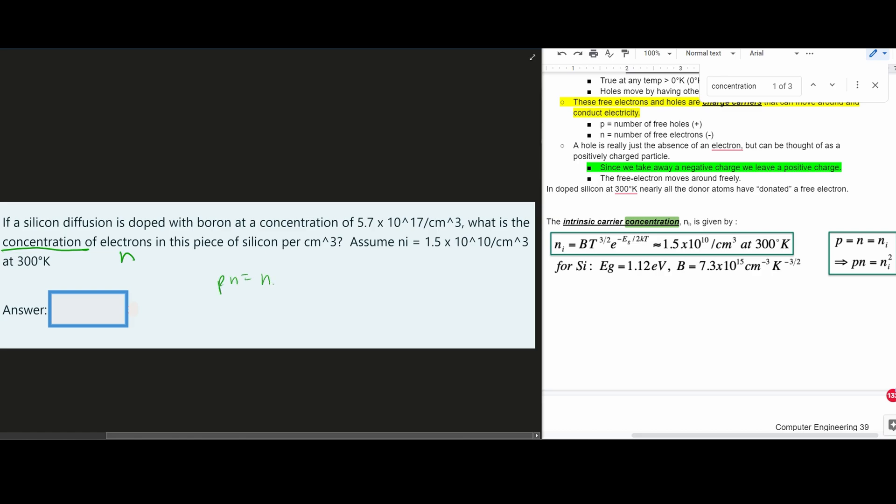Pn is equal to our n subscript i squared. And so our n is equal to our Ni squared over P, because that's what we want to find, right? Our electrons.